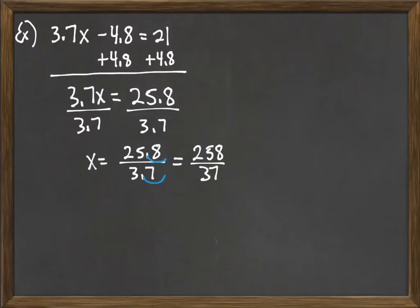Now we get 258 over 37. If we could go any further with that, we would simplify, but in this case that's all we can do. We've simplified as far as we can go. So x equals 258 over 37.